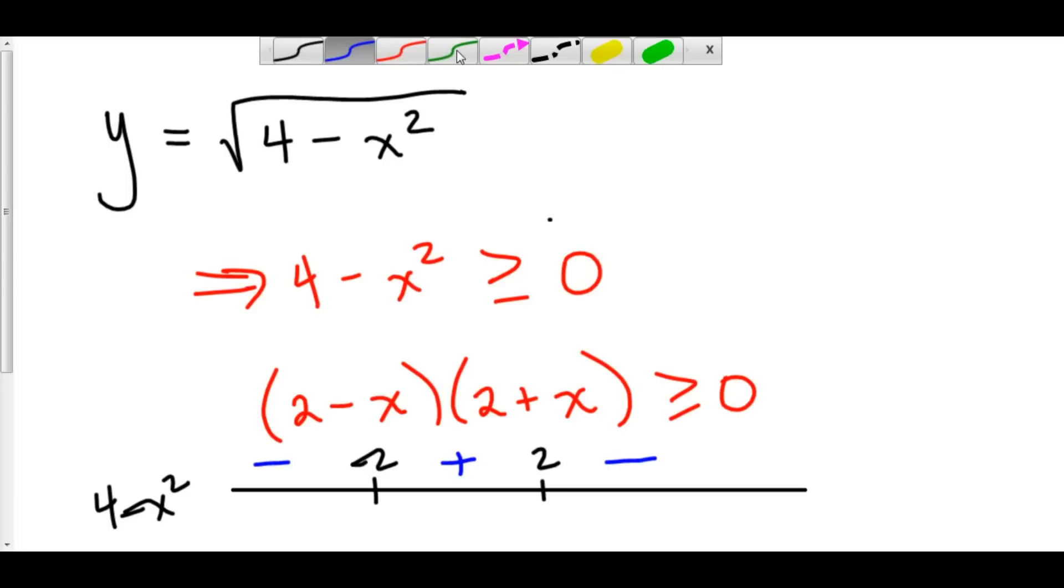So, what this means is that the domain exists from negative 2, because if you plug in negative 2, you get the square root of 0. That's okay. To 2, because if you plug in 2, you get 0. And that's all right. And everywhere in between negative 2 and 2, 4 minus x squared is going to be positive. So, the domain here is x exists from negative 2 to 2.